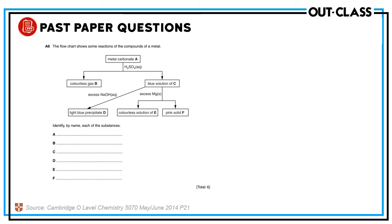Another question: a metal carbonate with sulfuric acid produces a colorless gas and a blue solution. The gas B can only be carbon dioxide — confirmed, as carbonate always gives carbon dioxide with acid. The blue solution indicates copper ions, so metal carbonate A must be copper(II) carbonate. Copper carbonate plus sulfuric acid gives copper(II) sulfate plus water plus carbon dioxide, so the blue solution C is copper(II) sulfate.